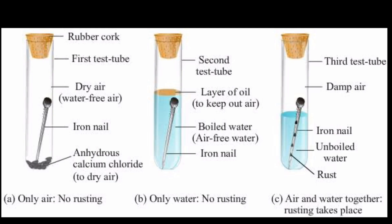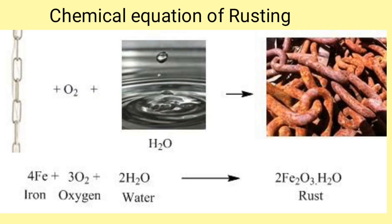From this activity we can see that the conditions required for rusting are the presence of oxygen from air and water or water vapor or moisture. Both oxygen and moisture are required for rusting.